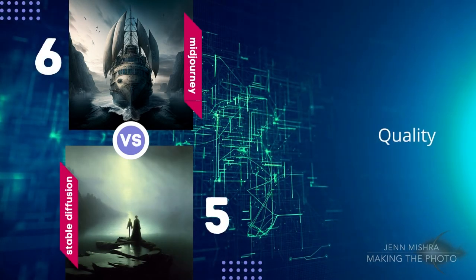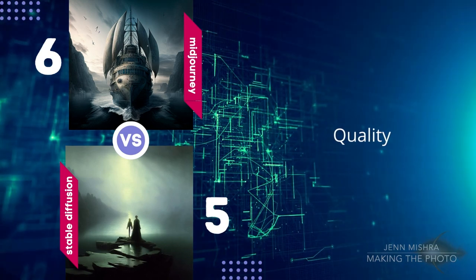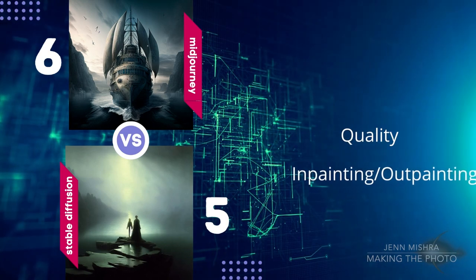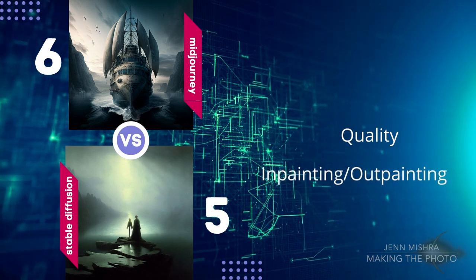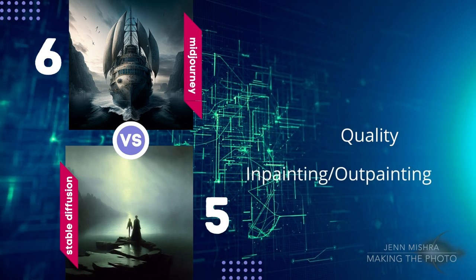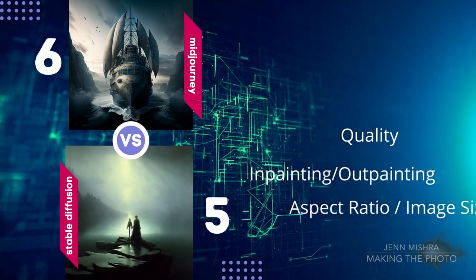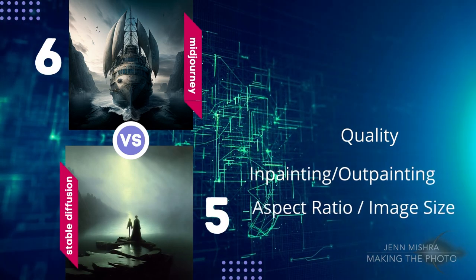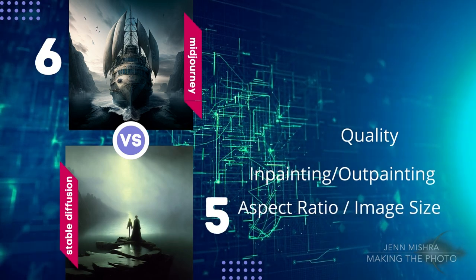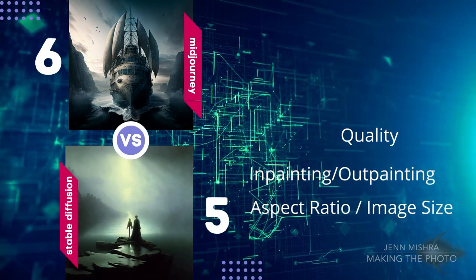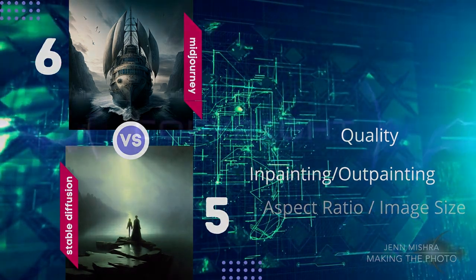It's hard to directly compare quality — the amount of detail in your image has a lot to do with your prompt and preferences. In Mid Journey, you can ask for more detail using the quality parameter –q2, but you can increase the steps in Stable Diffusion to get more quality and detail, though processing time is often longer. With Stable Diffusion, you have more control over quality details. Both AIs have additional tools — Stable Diffusion has in-painting and out-painting, which is huge. Mid Journey slightly edges out Stable Diffusion in terms of image size and available aspect ratios, but this is something likely to expand for both AI generators in the future.